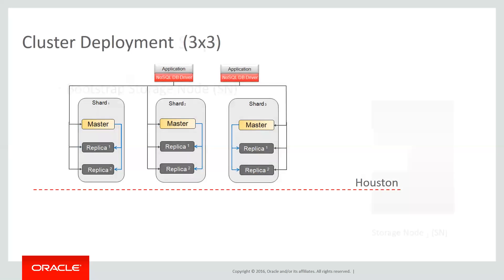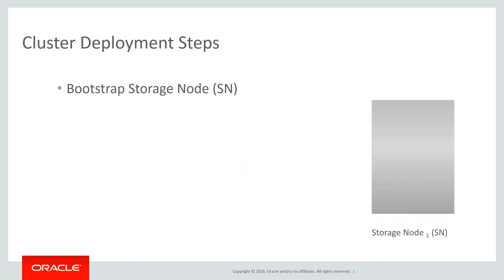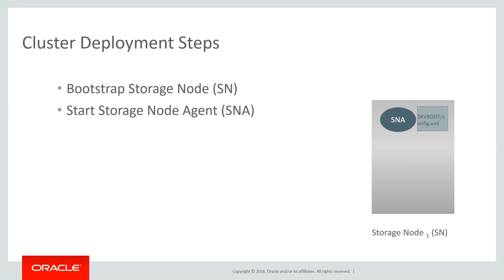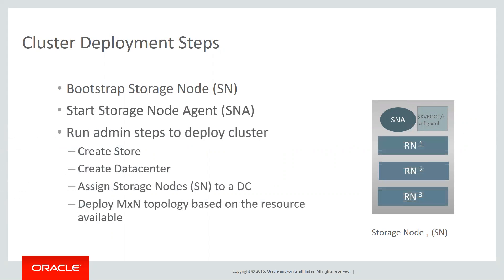Before we do the hands-on lab, let's understand the cluster deployment steps. At a high level, the first step is to bootstrap the storage nodes that will be used in the NoSQL deployment — this creates a config file in the KV root folder. The second step is to start the storage node agent, which works as a listener. You perform both steps on each storage node. Then the final step is to run a set of admin commands: create a store, create a data center, assign the storage nodes to the data center, and finally deploy the NoSQL cluster.